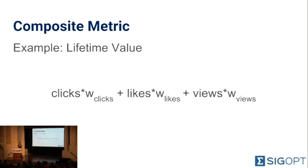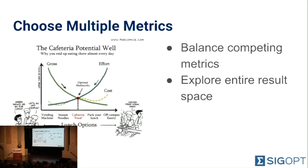There are a couple of ways to build your organization's values into a performance metric to avoid a situation like that. The first is to use a composite metric — taking several different metrics and creating a scalar value. For example, lifetime value as a weighted linear combination of views, likes, and clicks, which may be familiar to those in the e-commerce space. The idea is to produce a single scalar value from different metrics for your hyperparameter optimization to optimize. Alternatively, you could report two different competing metrics and use a tool like SigOpt to efficiently determine optimal values, leaving you to use your expert intuition to balance things like accuracy and prediction time.